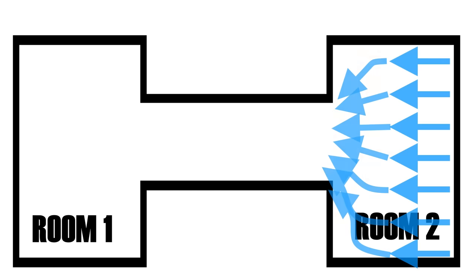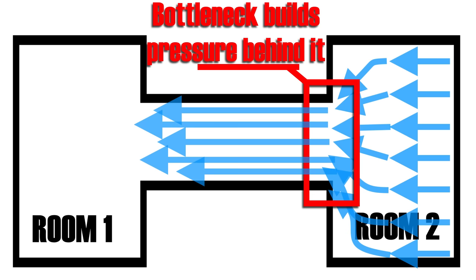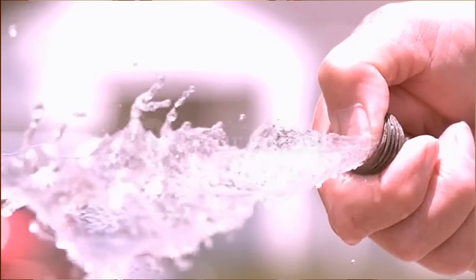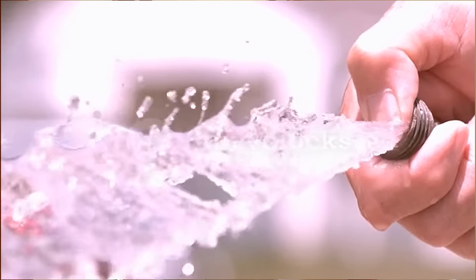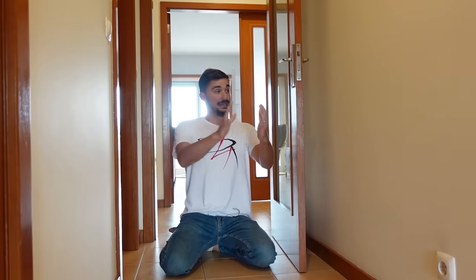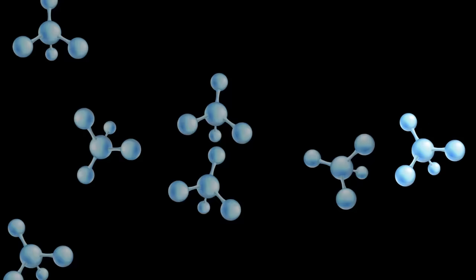We reduced pressure on this side of the door because we increased air velocity. Air velocity increases because our narrow hallway creates a constriction — a bottleneck. Air builds behind this constriction and then pushes through the narrow hallway, increasing its velocity. You can experience this yourself: grab a garden hose and obstruct half of it with your thumb — you'll see how the water exits with greater velocity.